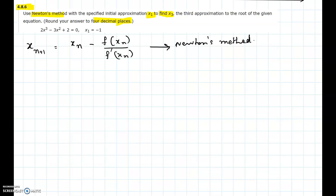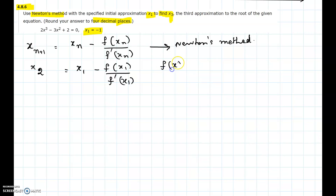In this problem we are given the first approximation x1 = -1 and we are asked to find the third approximation x3. To apply the rule, x2 equals x1 minus f(x1) divided by f'(x1). Because we need both f and f prime, we find the derivative of the given function. The function is 2x³ - 3x² + 2, and its derivative is 6x² - 6x.